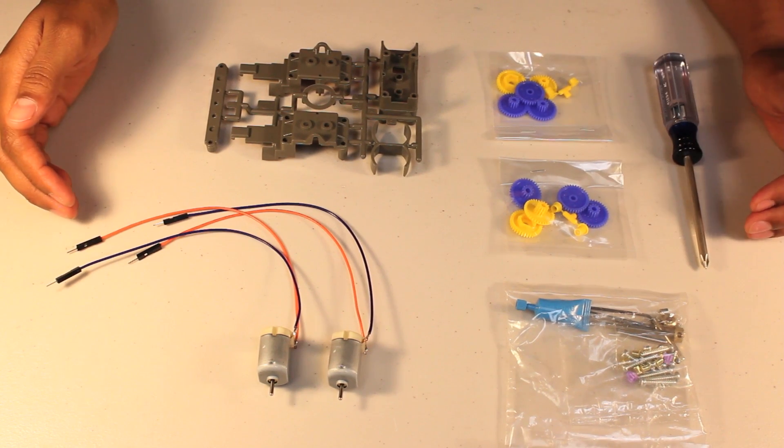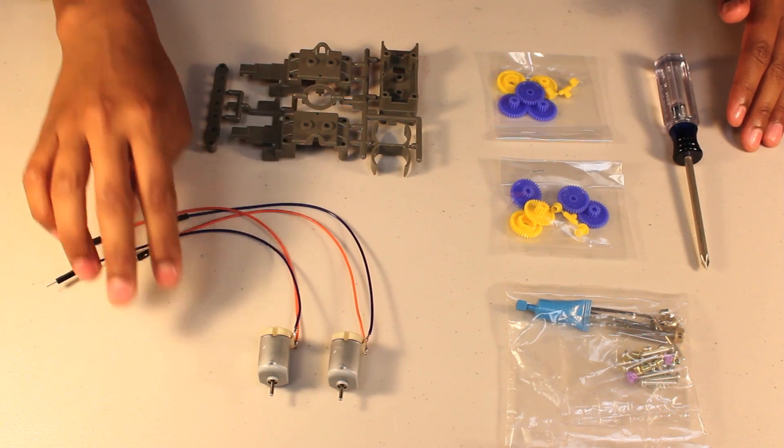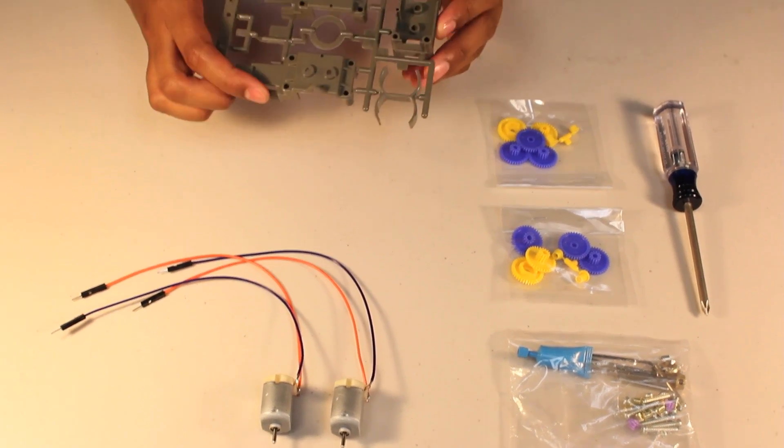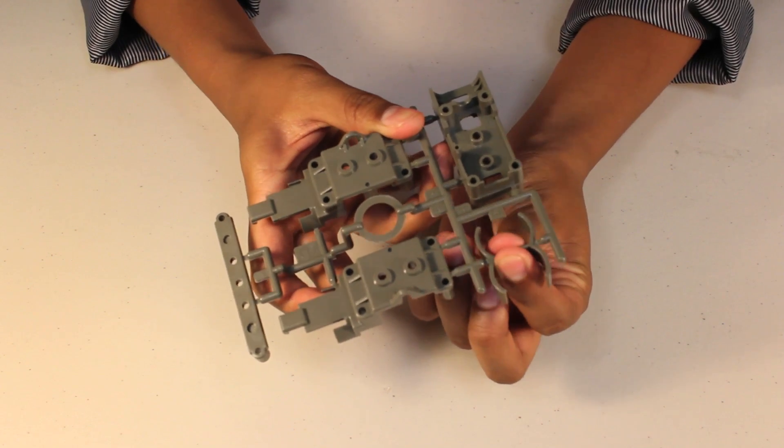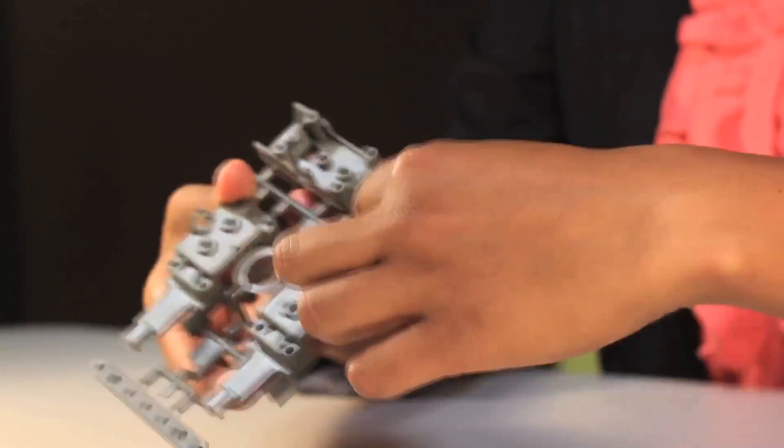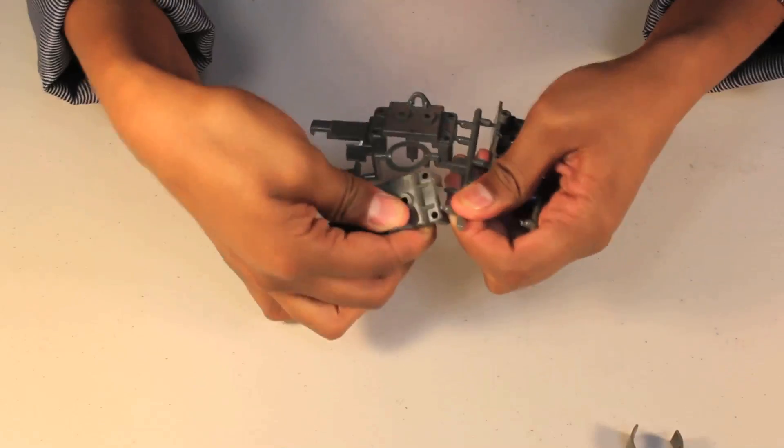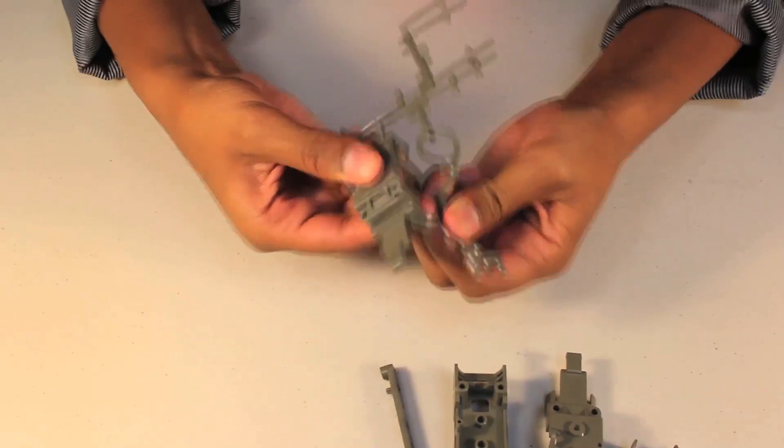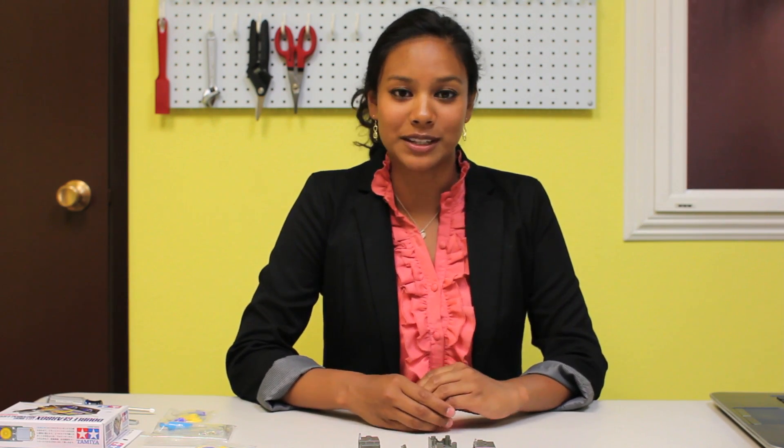These are the components from our box. We have our screws, some gears, a Phillips screwdriver, two motors with four pre-soldered wires, as well as our gearbox housing. The first step we want to do is take our gearbox housing and twist off the separate components. Gently twist off the five parts from this assembly. And these are the parts for our gearbox housing. Let's go ahead and take out the individual pieces from the three bags.